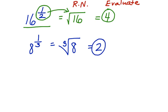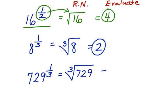Here's one more. Let's say I have 729 to the 1 third power. Again, anything to the 1 third power, I know I'm looking for the cubed root. So I'm looking for the cubed root of 729. The cubed root of 729 is 9. Now I've used radical notation and I've evaluated the radical as well.